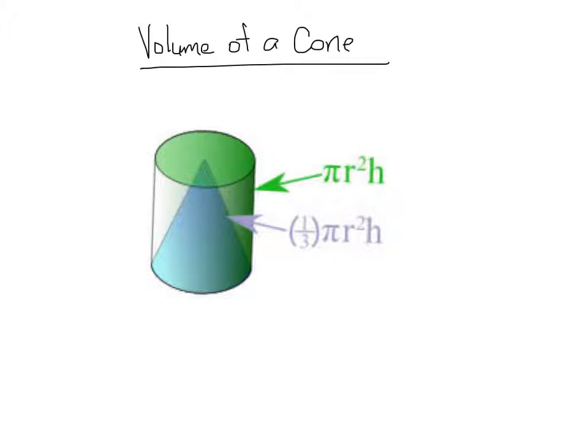Okay, so though it's a bit harder to visualize, a cone is actually a third of a cylinder, believe it or not. So we already know that the volume of a cylinder is, or I hope we know, the volume of a cylinder is pi r squared times h. And if you don't know, now you know.